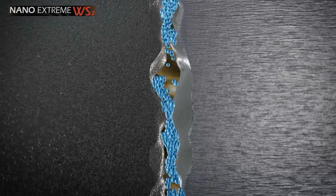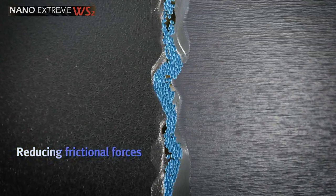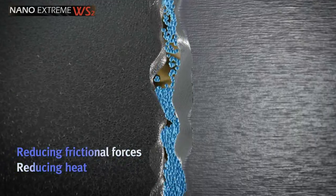The spherical morphology allows the particles to perform as nano-ball bearings, reducing frictional forces between metal surfaces as well as reducing heat.